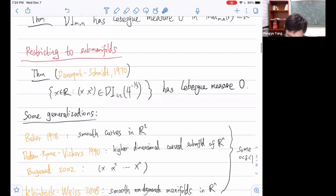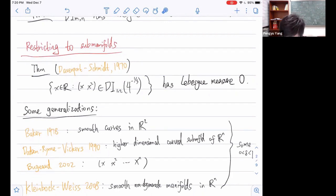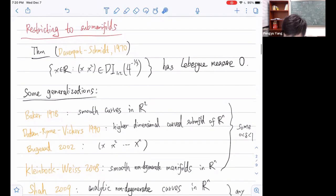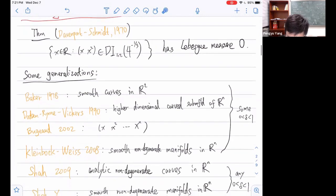As remarked by Kleinbock and Weiss, their proof can actually be generalized to show that if you consider the improvable M-by-N matrices in the space of M-by-N matrices, then the improvable ones have Lebesgue measure zero. Then the natural question to ask is to restrict the study to submanifolds of the Euclidean spaces. In 1970, Davenport and Schmidt first studied this planar curve (x, x²).